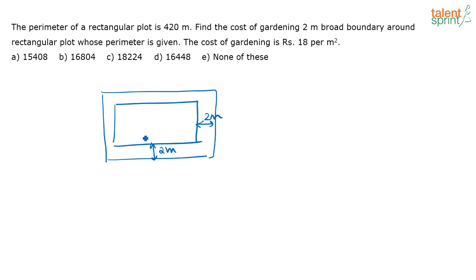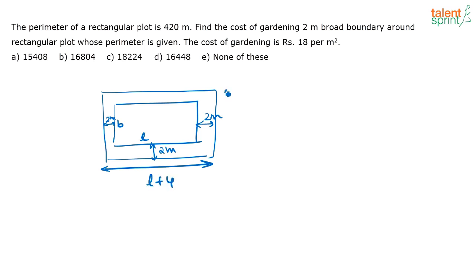If this is L and this is B for the inner rectangle, then the outer rectangle dimensions extend by 2 meters on each side. So the length of the outer rectangle is L plus 4, and similarly with a 2-meter extension on each side, the width is B plus 4.